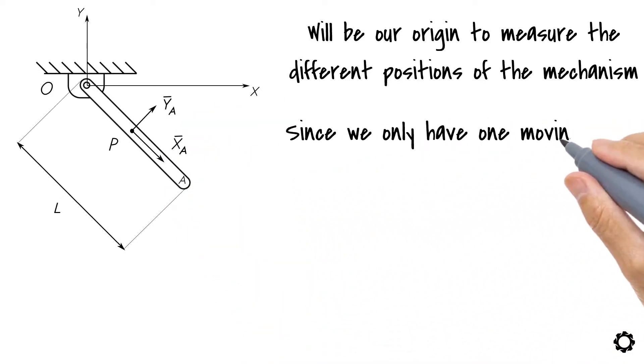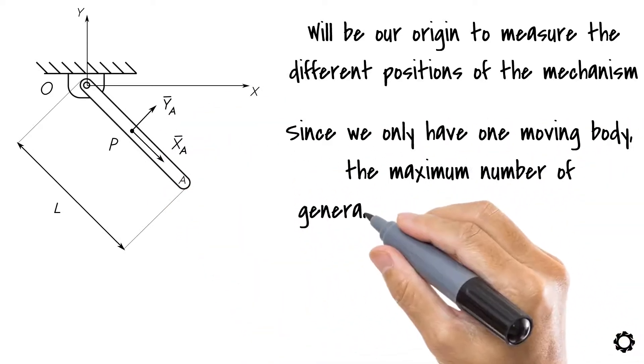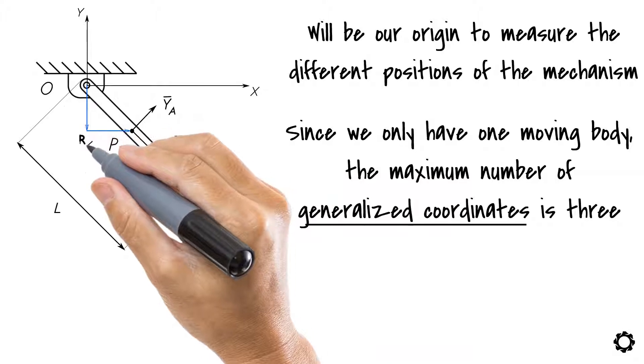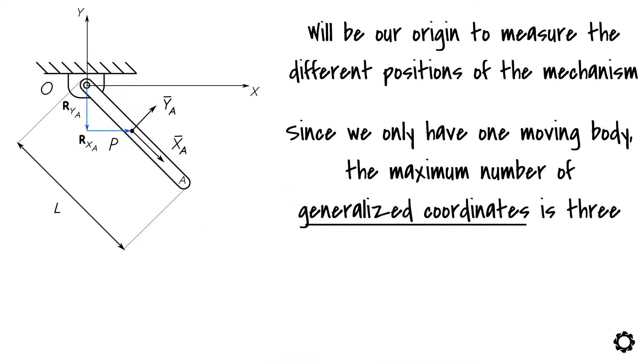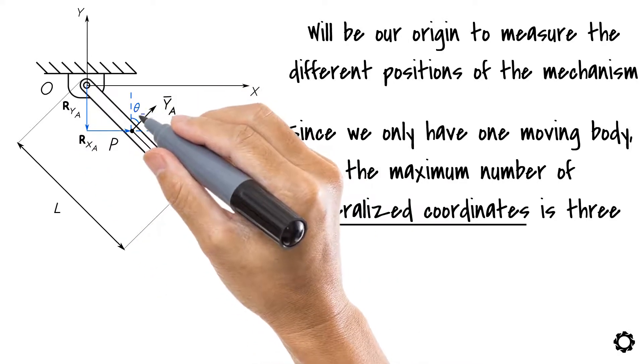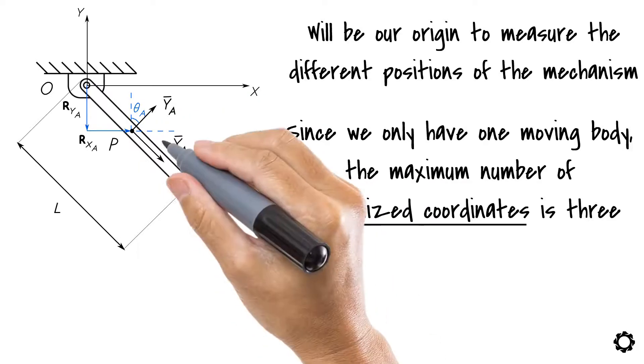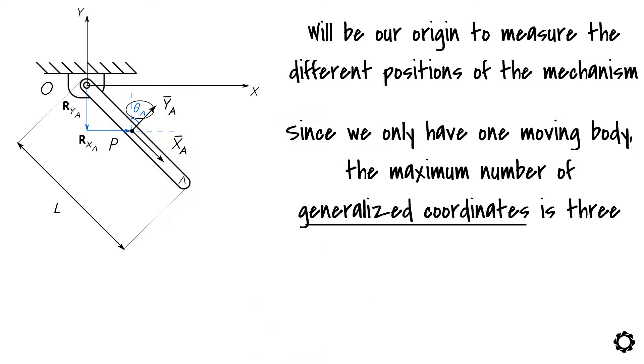Since we only have one moving body, the maximum number of generalized coordinates is 3. These are the translations of the origin of the body reference system along the x and y directions of the inertial reference frame, and the rotation of the body reference system with respect to this inertial reference system is represented by the angle theta_a. We can represent these generalized coordinates in a vector: Q equals [Rx_a, Ry_a, theta_a] transpose.